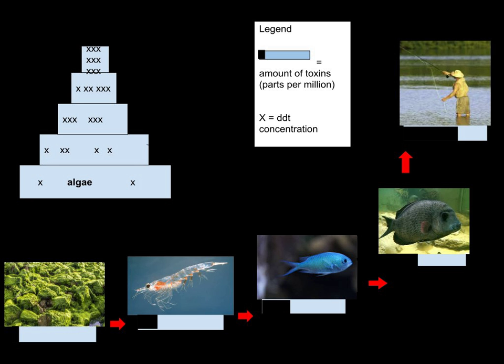Although sometimes used interchangeably with bioaccumulation, an important distinction is drawn between the two, and with bioconcentration. Bioaccumulation occurs within a trophic level, and is the increase in the concentration of a substance in certain tissues of organisms' bodies due to absorption from food and the environment. Bioconcentration is defined as occurring when uptake from the water is greater than excretion. Thus, bioconcentration and bioaccumulation occur within an organism, and biomagnification occurs across trophic levels.